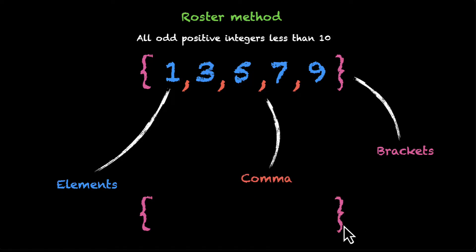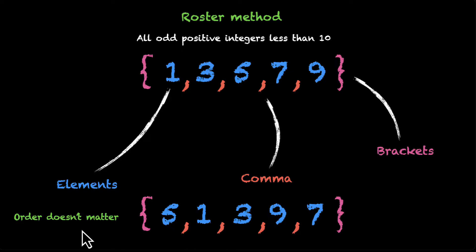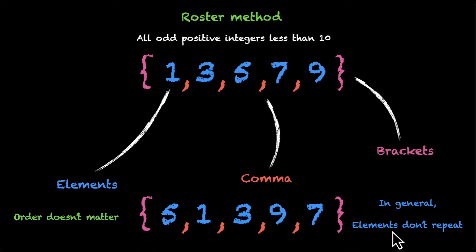A quick note: we could have also written the list of elements in a random order — 1, 3, 5, 7, 9 — and it would still be okay because the order does not matter. All we care about is whether the elements are part of the set or not. So 5, 1, 3, 9, and 7 are part of the set; 2, 13, 87 are not. Also, we don't generally repeat elements — stating that an element is part of the set once is enough.